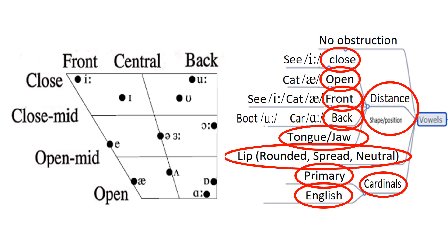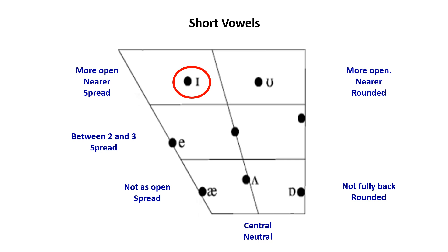These are the main twelve English short and long vowels. However, these vowels can combine to form diphthongs and triphthongs to make the total number of vowels in British English twenty. This vowel is more open than cardinal one, nearer to the center, the lips are slightly spread. This vowel is between the two cardinals two and three, the lips are slightly spread. This vowel is not as open as cardinal four, the lips are slightly spread. This vowel is central.